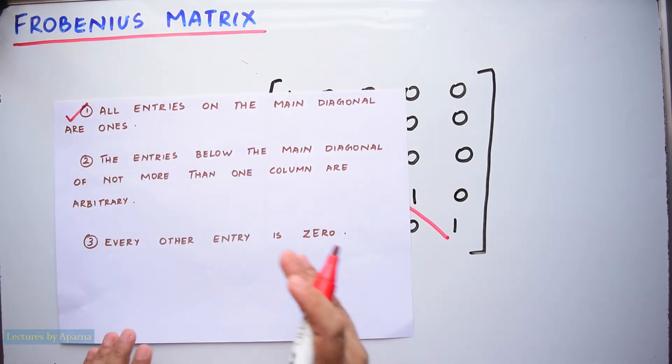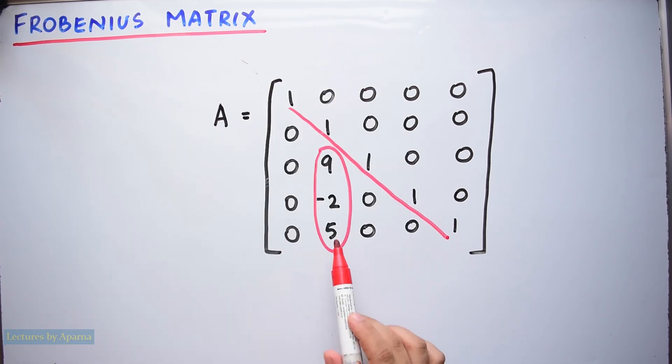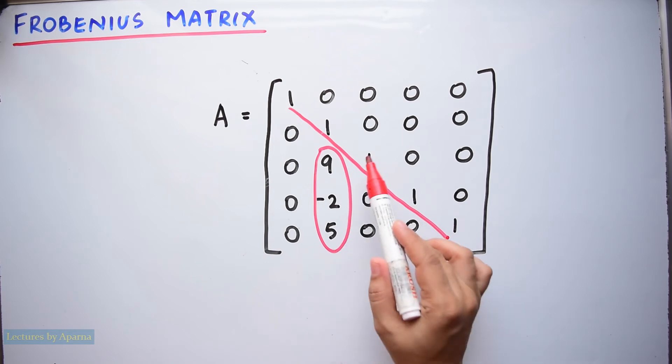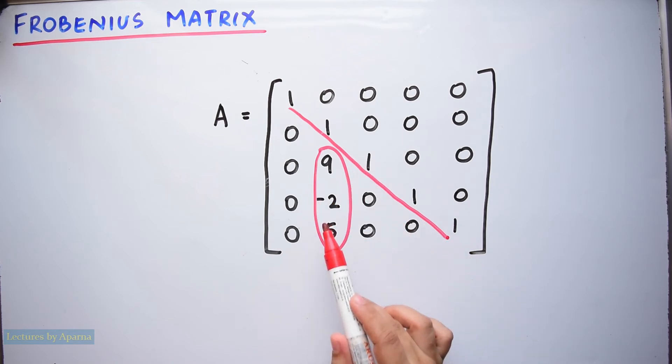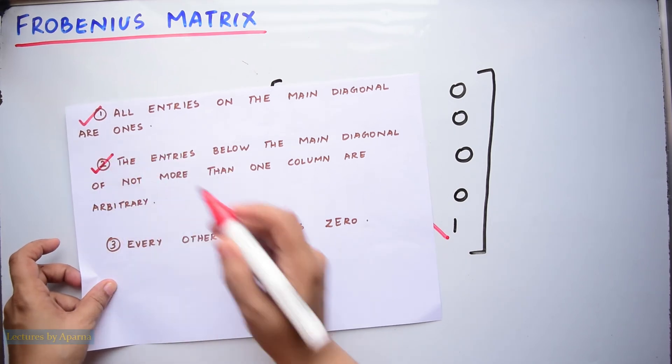Now let us see the second condition. The entries below the main diagonal of not more than one column are arbitrary. Consider this column below the main diagonal. There are some random numbers. Also only one such column should be like this. So second condition is also satisfied.